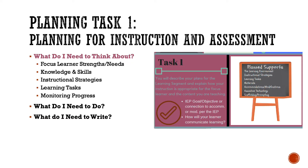Planning task one: planning for instruction and assessment. The EdTPA handbook is organized into sections titled: What do I need to think about? What do I need to do? And what do I need to write? We will begin our overview by discussing items that we should be thinking about as we are beginning our EdTPA.